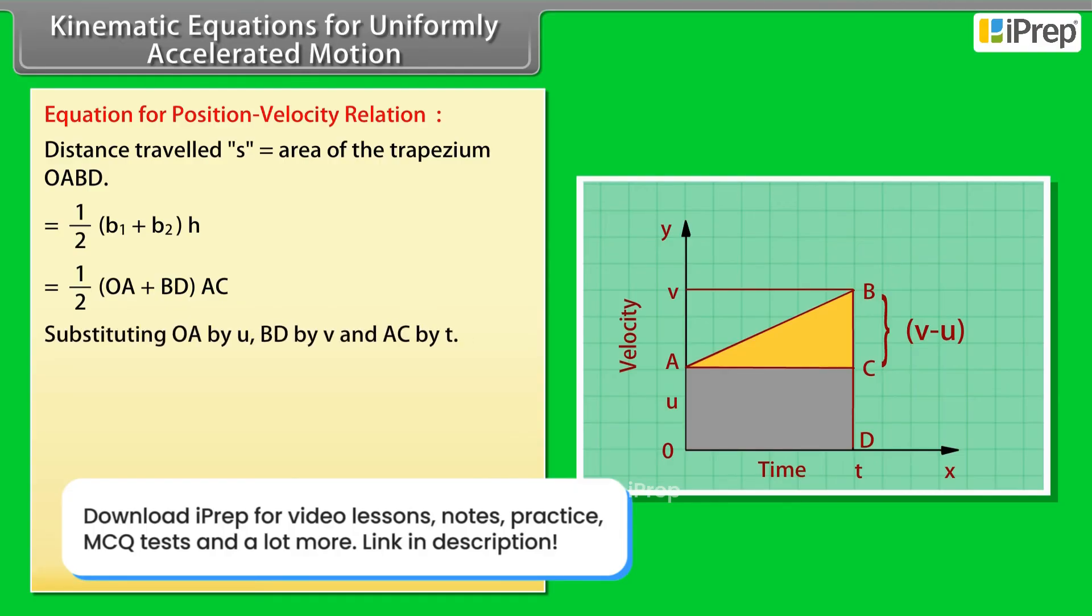Substituting OA by U, BD by V and AC by T, we get S equals one-half times U plus V times T.